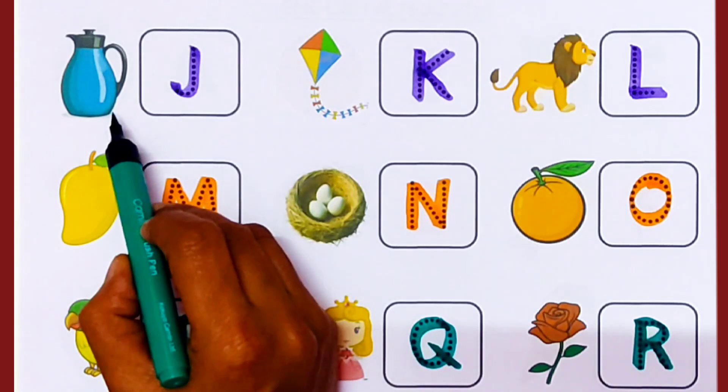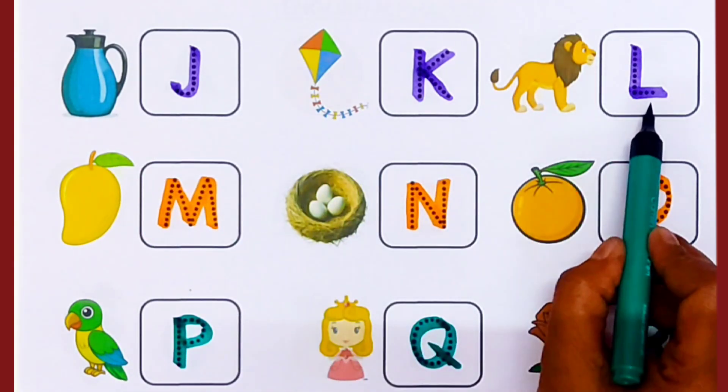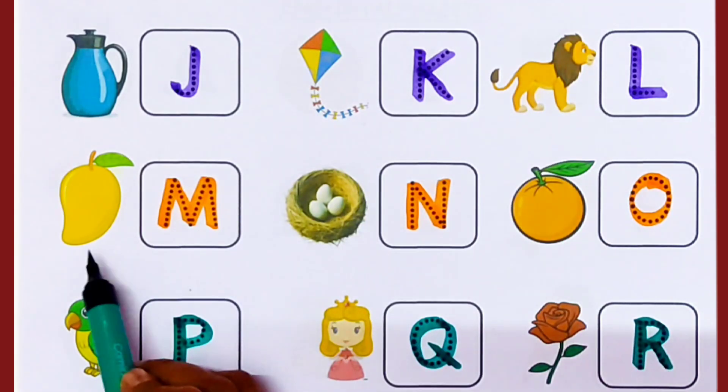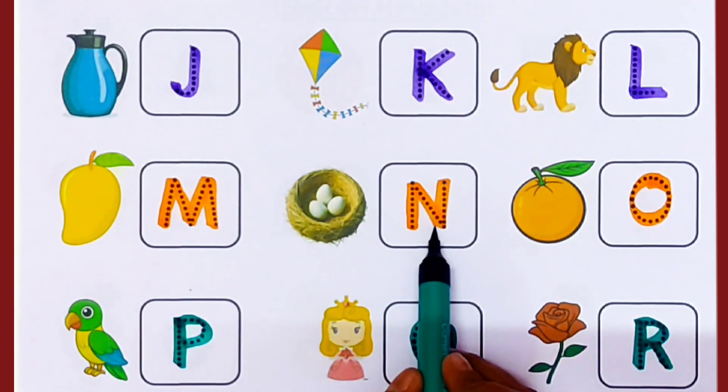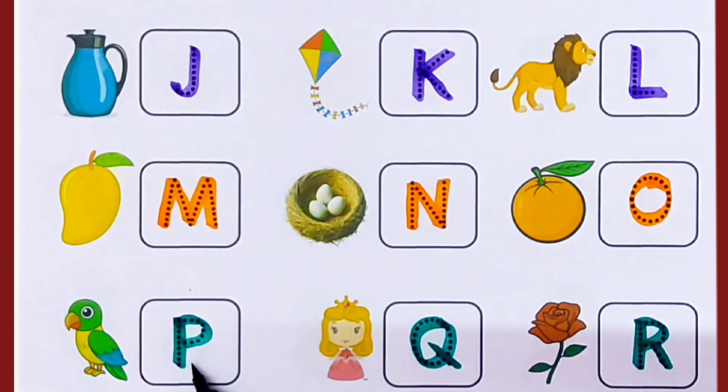L for Lion, M for Mango, N for Nest, O for Orange, P for Parrot, Q for Queen, R for Rose.